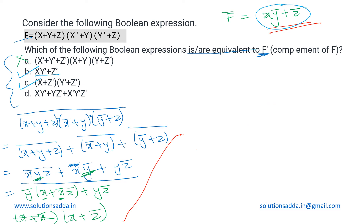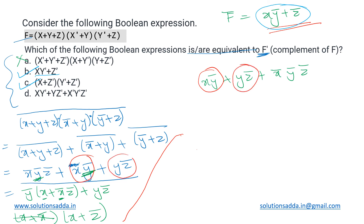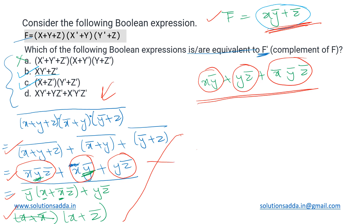Option D is given as xȳ + yz̄ + x̄ȳz̄. We can see xȳ is the same term we have; yz̄ and x̄ȳz̄ are also present in our earlier working. This is actually an intermediate step from when we were calculating f complement, which we then further simplified to reach the final form. So this value also represents f complement, just not in its simplest form. Therefore options B, C, and D are all correct answers.